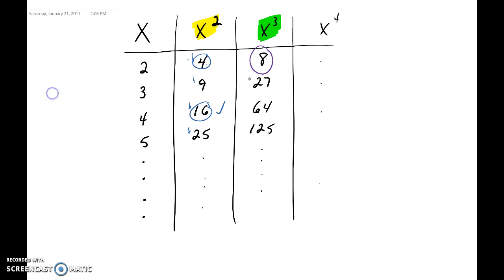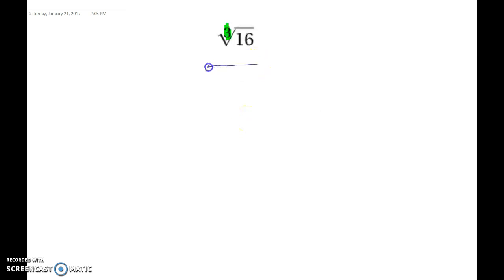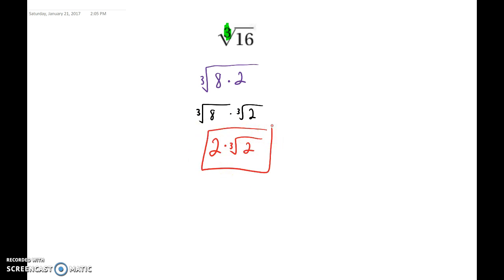8 goes into 16 two times. 27 and larger numbers are too big, so they'll never go in. The only perfect cube that divides evenly into 16 is 8, so we rewrite this as the cube root of 8 times 2. Note that 4 goes into 16 but 4 is not a perfect cube, so it's no good. We separate into cube root of 8 times cube root of 2. The cube root of 8 is 2, so the answer is 2 times the cube root of 2 — our simplified form, with the same decimal value as the original.